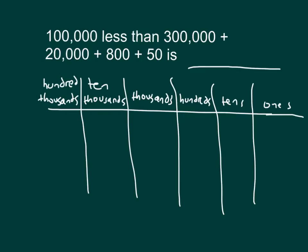Here is another problem. 100,000 less than a number written in expanded form. We'll model this number in our place value chart first, with three disks in the 100,000s place. Then 20,000, which is two 10,000s.